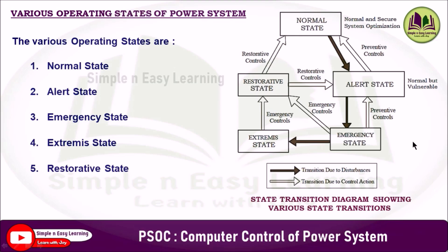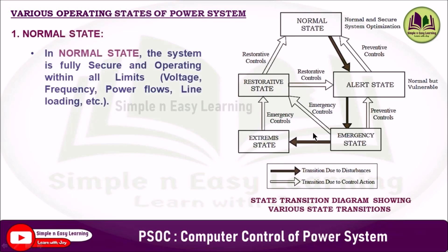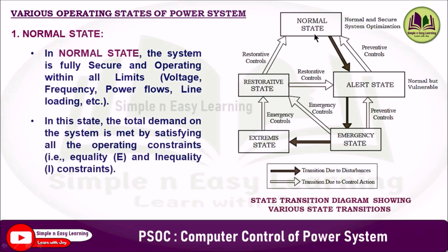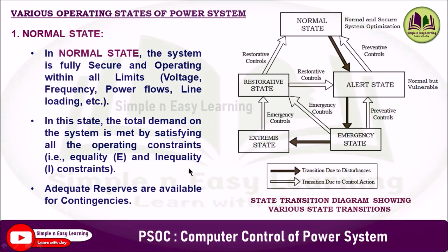In the normal state, the system is fully secure and operating within all limits — for example, voltage, frequency, power flow, and line loading. The total demand is satisfied while meeting all operating constraints: equality constraints (total power generation equals total power demand plus losses: PG = PD + PL) and inequality constraints such as generator capacity constraints, voltage constraints, spinning reserve capacity constraints, transformer tap settings, transmission line constraints, and network security constraints.